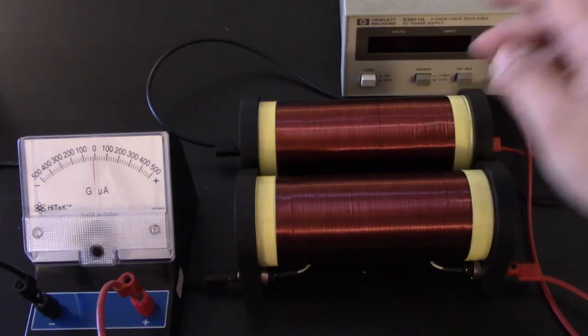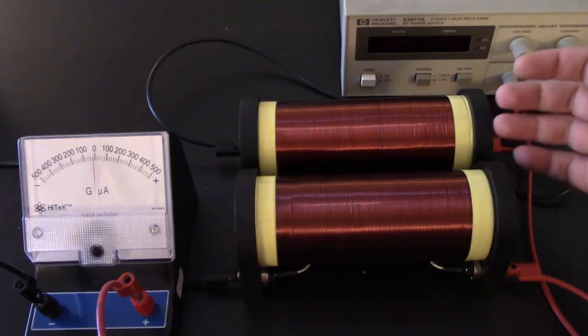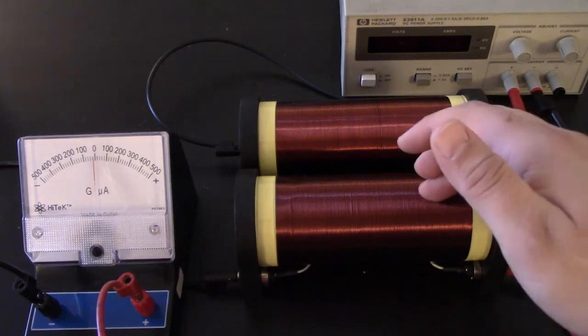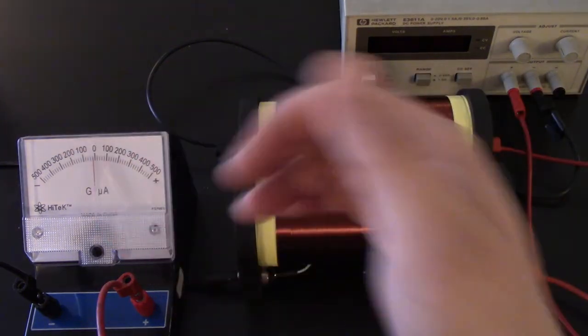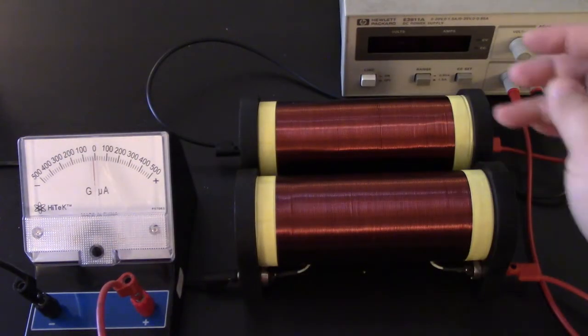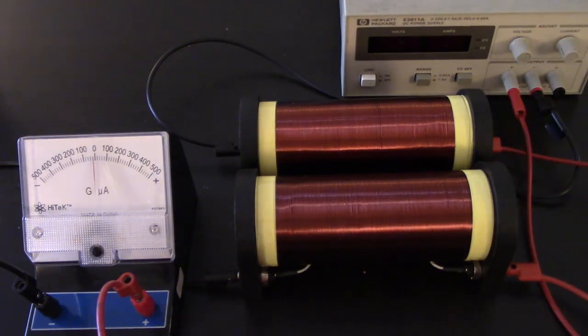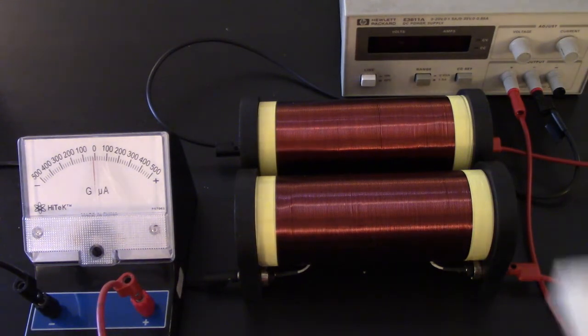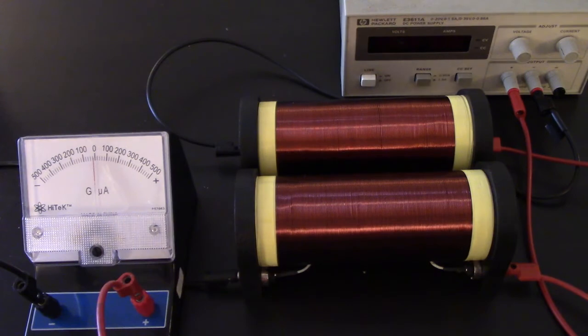Which is going to then induce a current in this one, which again will show up in the galvanometer in the opposite direction. So that's part F. Other than that, I think you just have summary questions. Good luck, and I will see you next week.